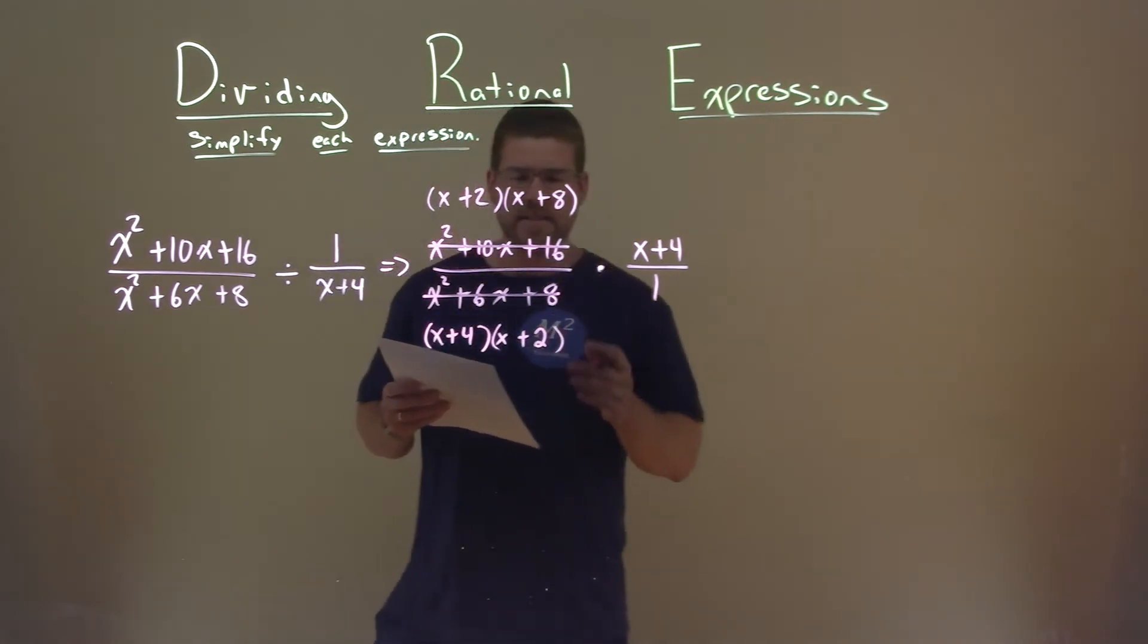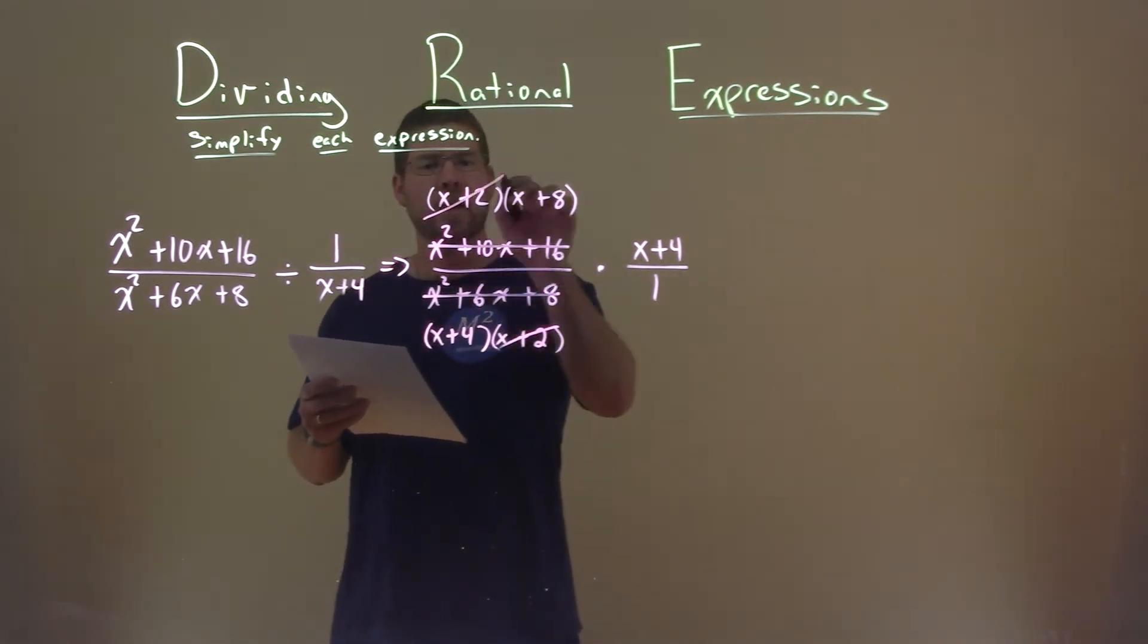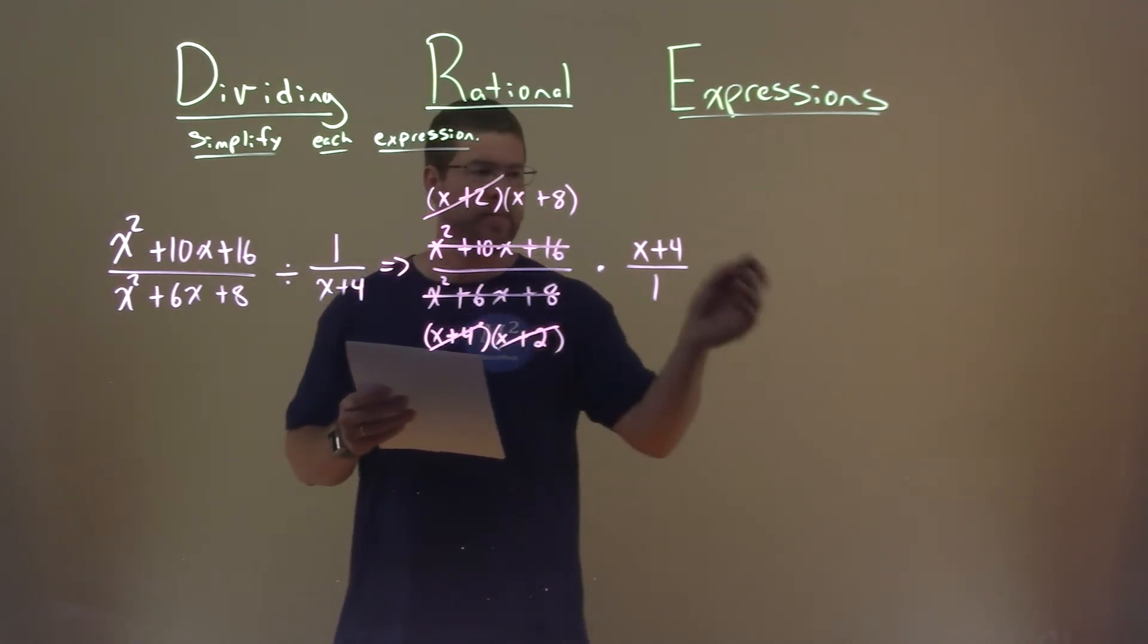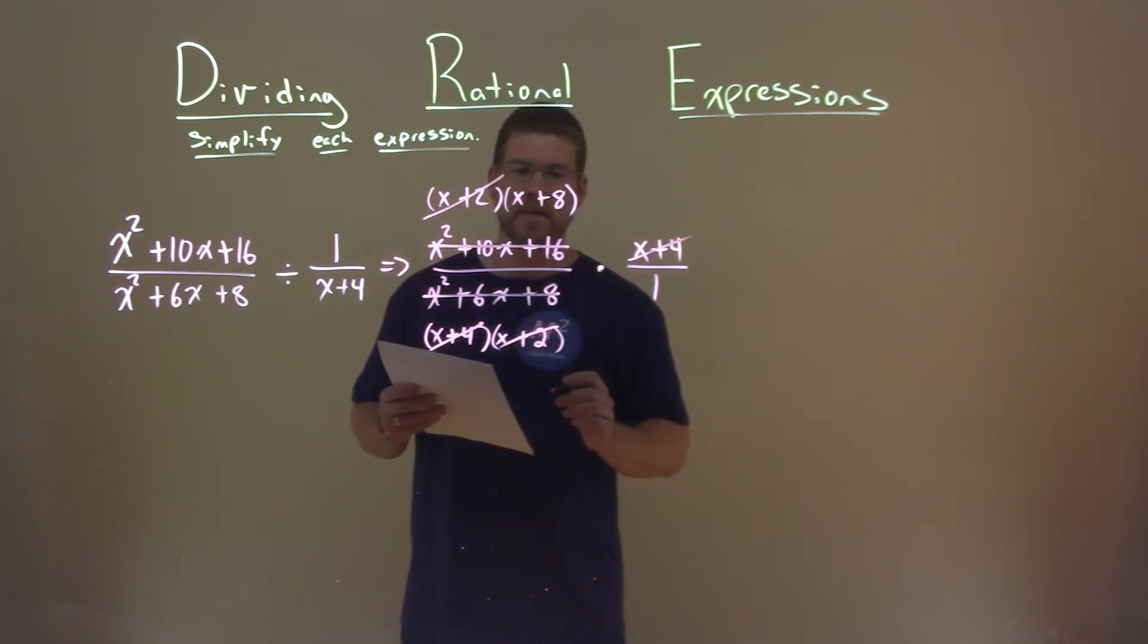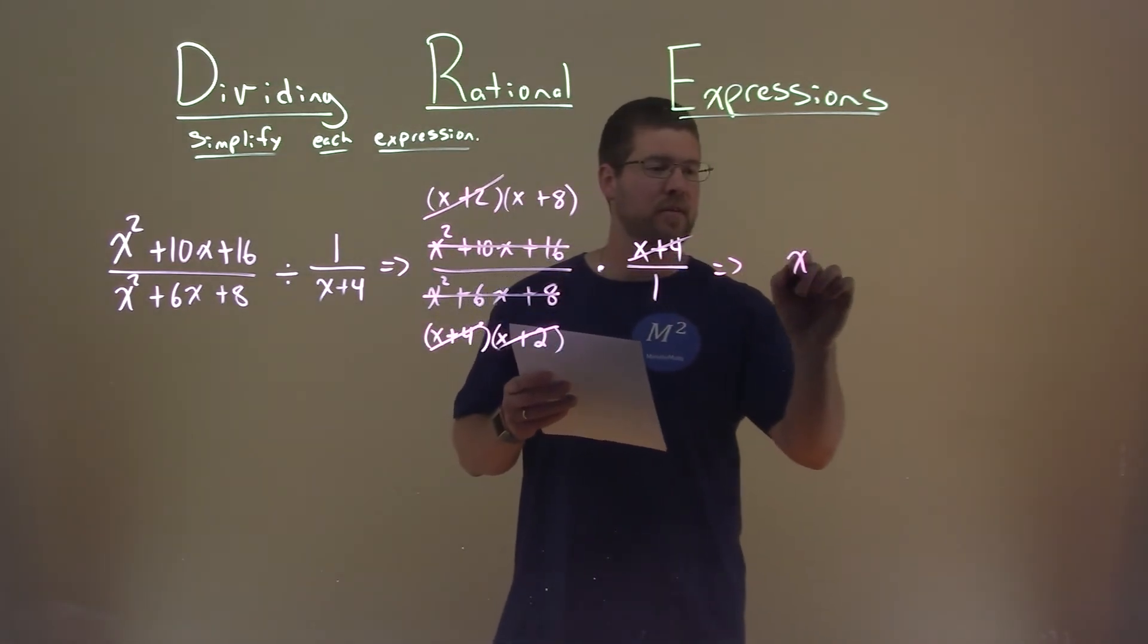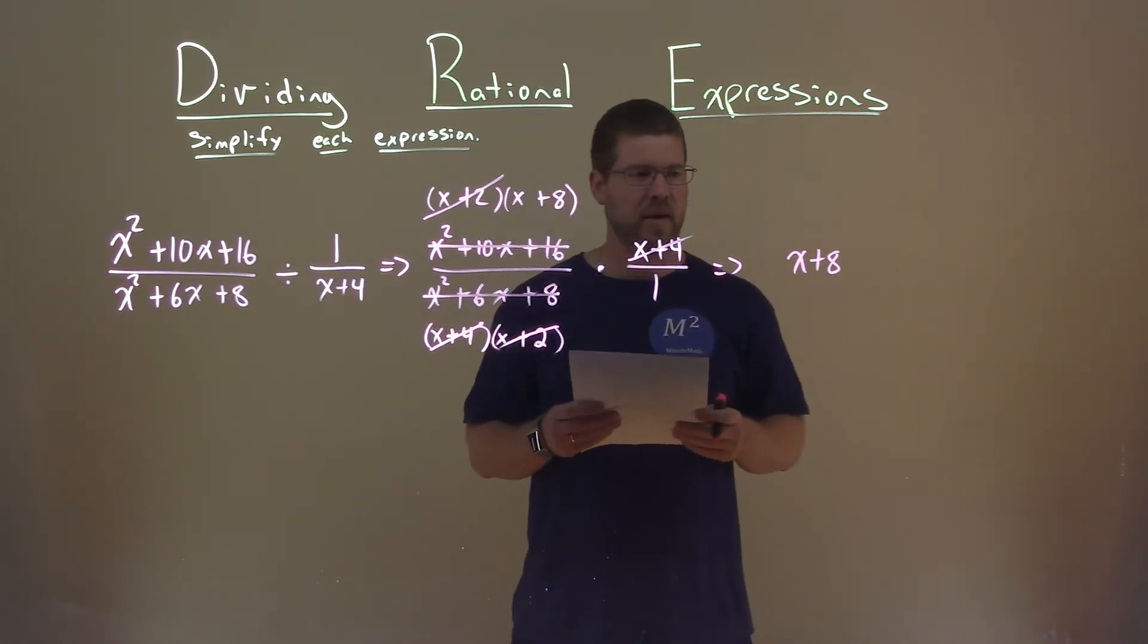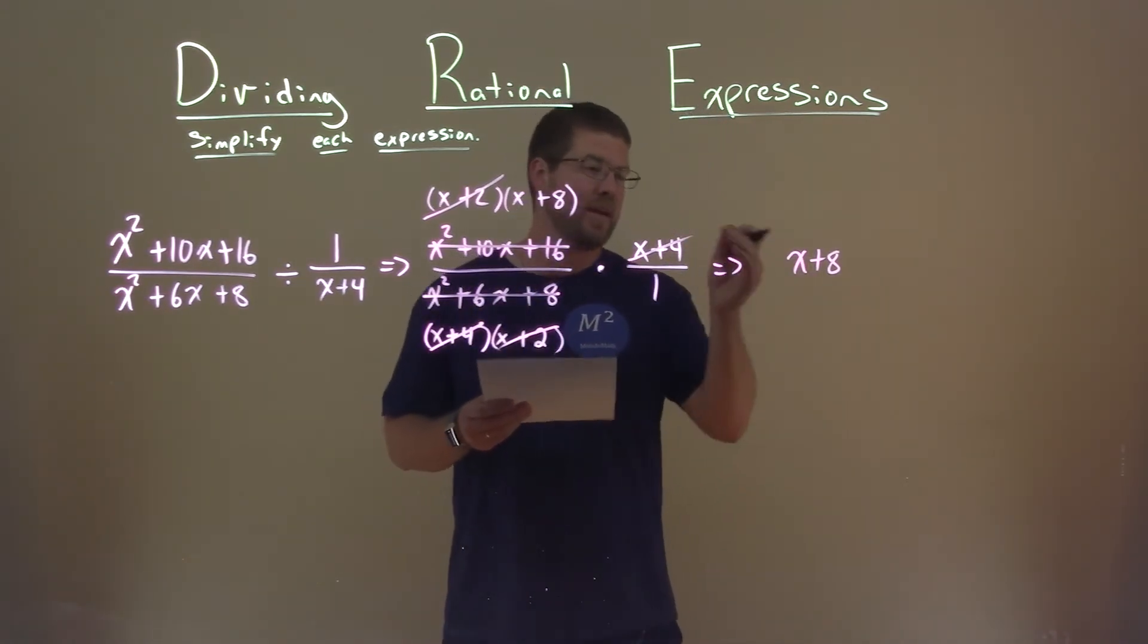So now we can see what can we eliminate. I see x plus 2 in the denominator, x plus 2 in the numerator. X plus 4 in the denominator, x plus 4 in the numerator, and that's basically it. What are we left with? Well, the numerator is just that x plus 8. The denominator is just the 1. Don't need to write that. And so, x plus 8 is our final answer.